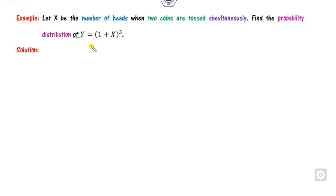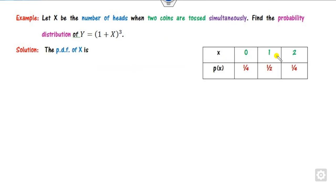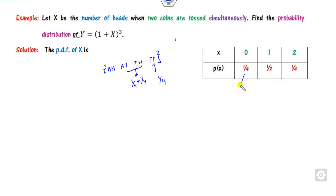Now let x be the number of heads obtained in 2 tosses of a coin. The outcomes are HH, HT, TH, TT — four forms. x is the number of heads, so x can be 0, 1, or 2. That is the required PMF. The probability of 0 heads is 1/4, probability of 1 head is 1/4 + 1/4 = 1/2, and so on. You can also apply the binomial distribution: P(x) = C(n,x) * (1/2)^x * (1/2)^(n-x), for example C(2,0)*(1/2)^0*(1/2)^2, C(2,1)*(1/2)^1*(1/2)^1, and so on.